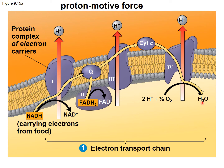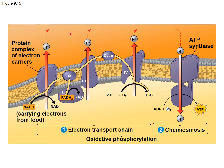The other part — chemiosmosis — is going to use this proton motive force. The chemical gradient is built by the passing of electrons between the complexes and the pumping of protons from the matrix to the intermembrane space. The only way protons can return to the matrix is through a protein complex called ATP synthase. As they move through it, this part spins around like a rotor, and proteins bind ADP with inorganic phosphate to make ATP. This is chemiosmosis.